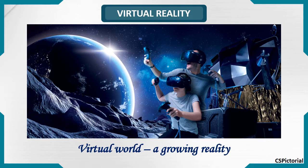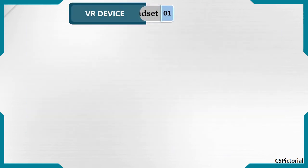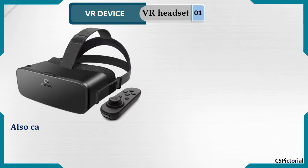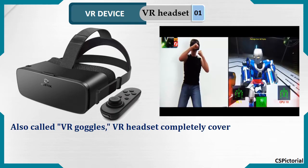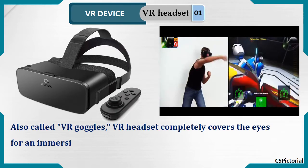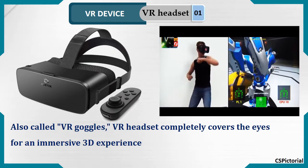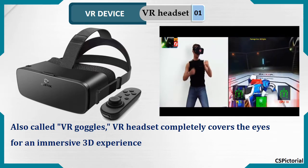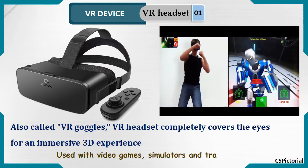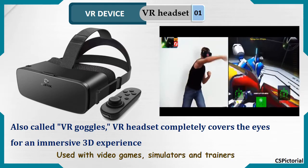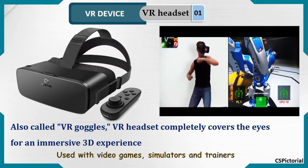Let us find how these special devices look like. This is the virtual reality headset. The headset puts up a screen in front of your eyes and covers the eyes for a perfect 3D experience. These are used in video games, simulators and trainers.